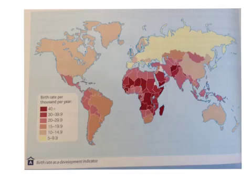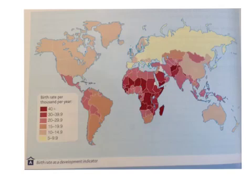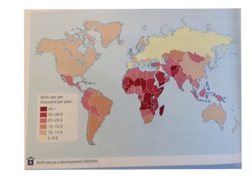Looking at this map here and thinking about our previous screencast, Africa is also standing out like it did in the previous map of being poor. On this one, as you can see, it has a very high birth rate — over 40 per thousand in large numbers of African countries. Whereas if you look at some of the wealthier countries, so Europe and North America, you can see their colours are much lighter, so their birth rates are much lower, somewhere between 5 and maybe 14.9 in total.